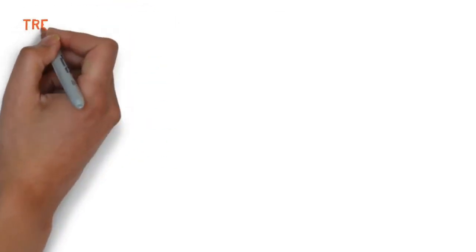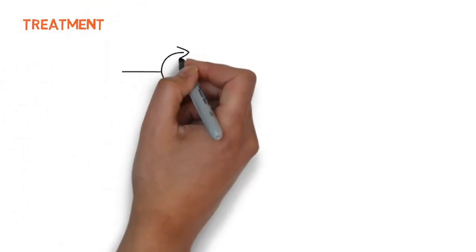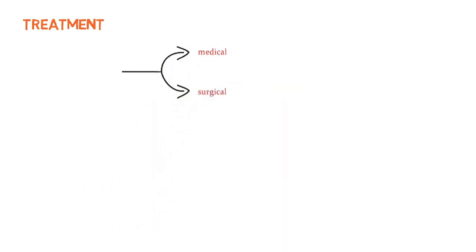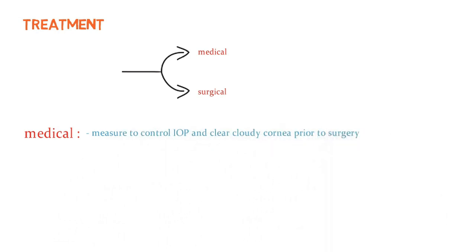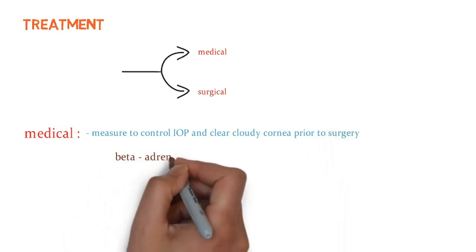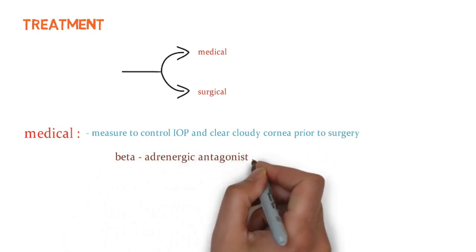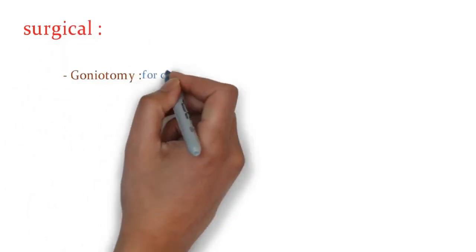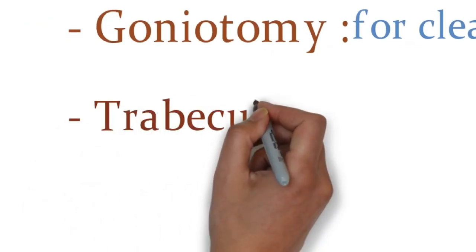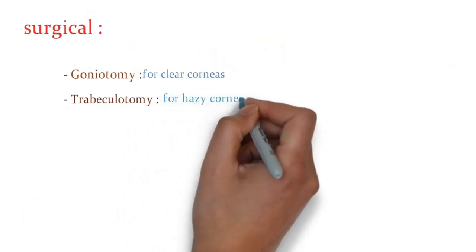Treatment is divided into medical and surgical units. In medical treatment, we focus on controlling intraocular pressure and clearing the cloudy cornea prior to surgery. Drugs like beta-adrenergic antagonists can be used to relax the muscle and open the obstruction, and carbonic anhydrase inhibitors such as acetazolamide, methazolamide, and dorzolamide are also used. For surgical treatment: goniotomy is used for clear corneas and trabeculectomy for hazy corneas. Please let us know in the comments if you want to learn more about these surgeries.